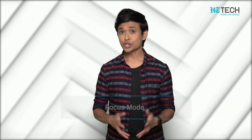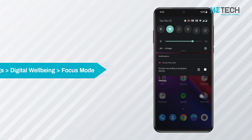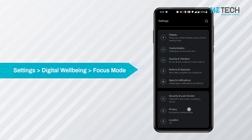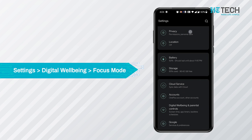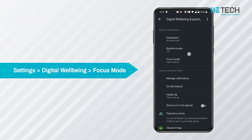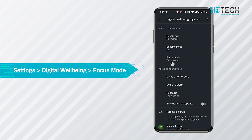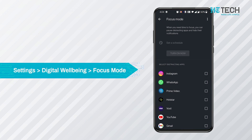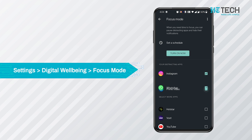Focus Mode. You can take your productivity to another level with Android's built-in Focus Mode. To check it out, go to Settings and search for Digital Wellbeing. Tap on it and then look for the Focus Mode option. Here you'll be able to create a curated list of apps that you occasionally want to silence.